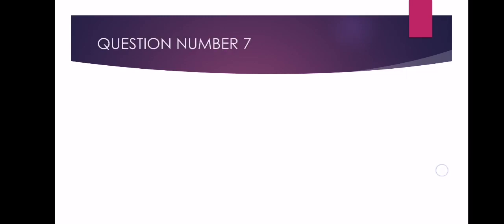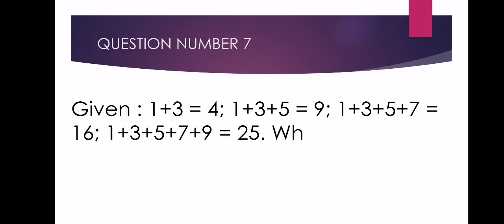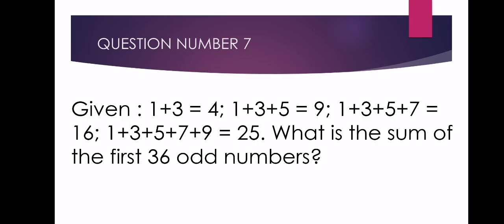For question number 7, given that 1+3 = 4, 1+3+5 = 9, and 1+3+5+7 = 16, 1+3+5+7...